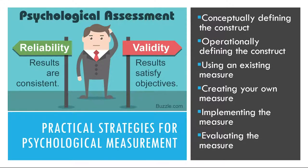Once you've used your measure on a sample of people and have a set of scores, you're in a position to evaluate it more thoroughly in terms of reliability and validity. Even if the measure has been used extensively by other researchers and has already shown evidence of reliability and validity, you shouldn't just assume that it worked as expected for your particular sample and under your particular testing conditions. You now have additional evidence bearing on the reliability and validity of the measure, and it would make sense to add that evidence to the research literature. In most research designs, it's not possible to assess test-retest reliability because participants are only tested once. For a new measure, you might design a study specifically to assess its test-retest reliability by testing the same set of participants at two separate times.